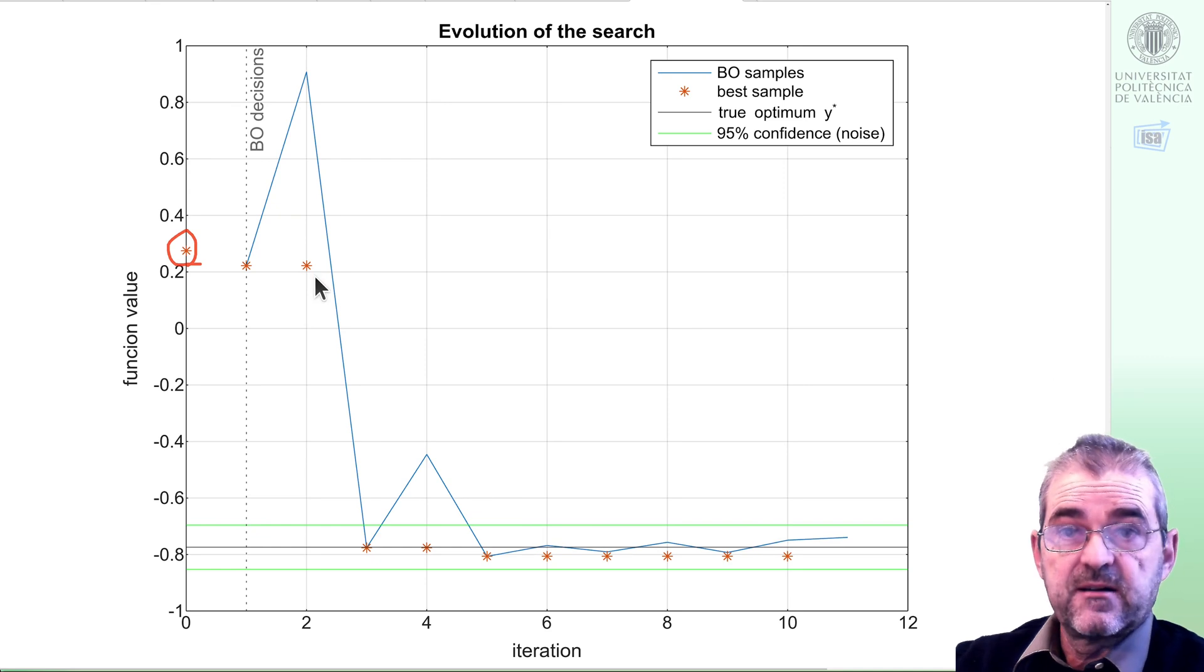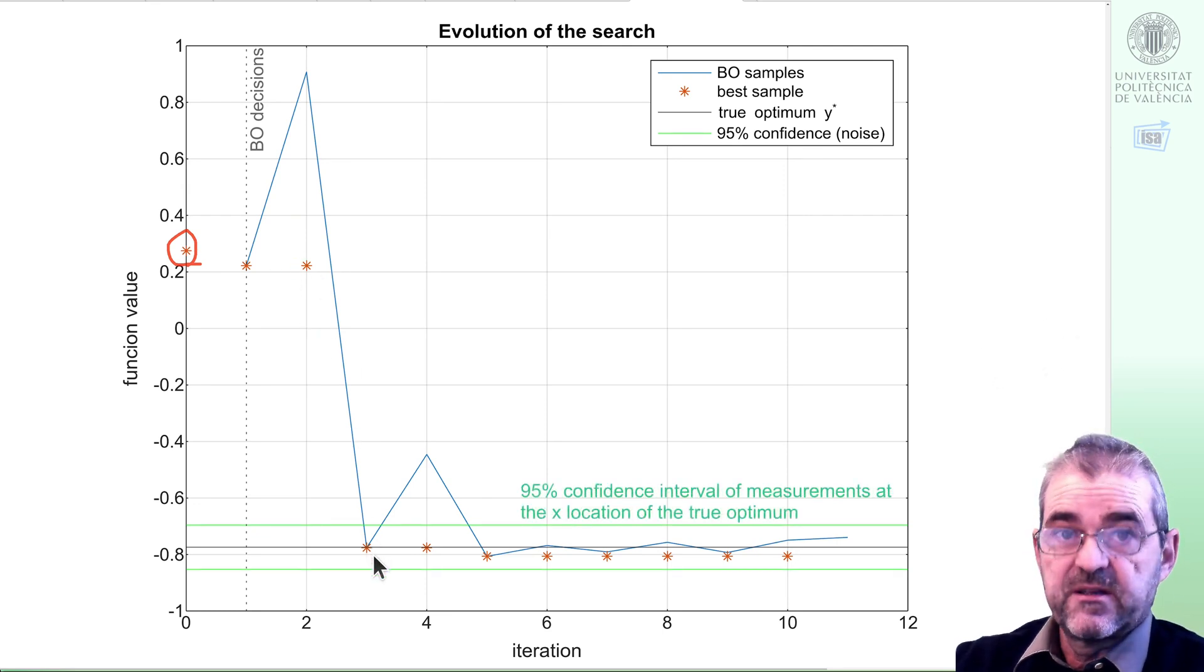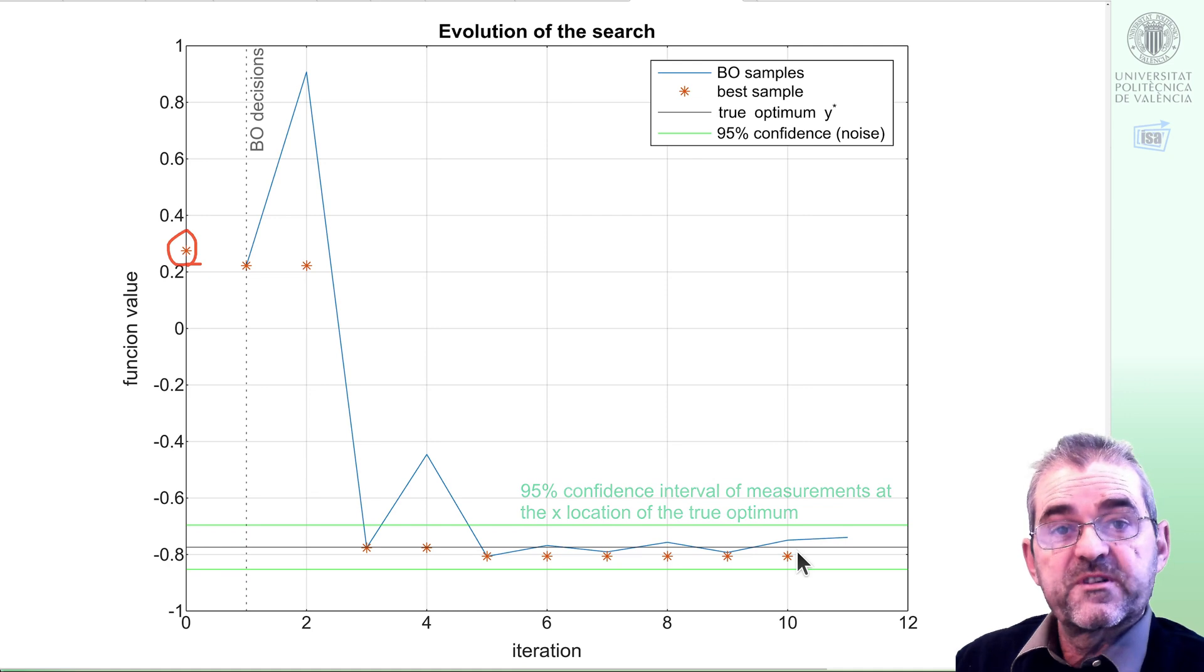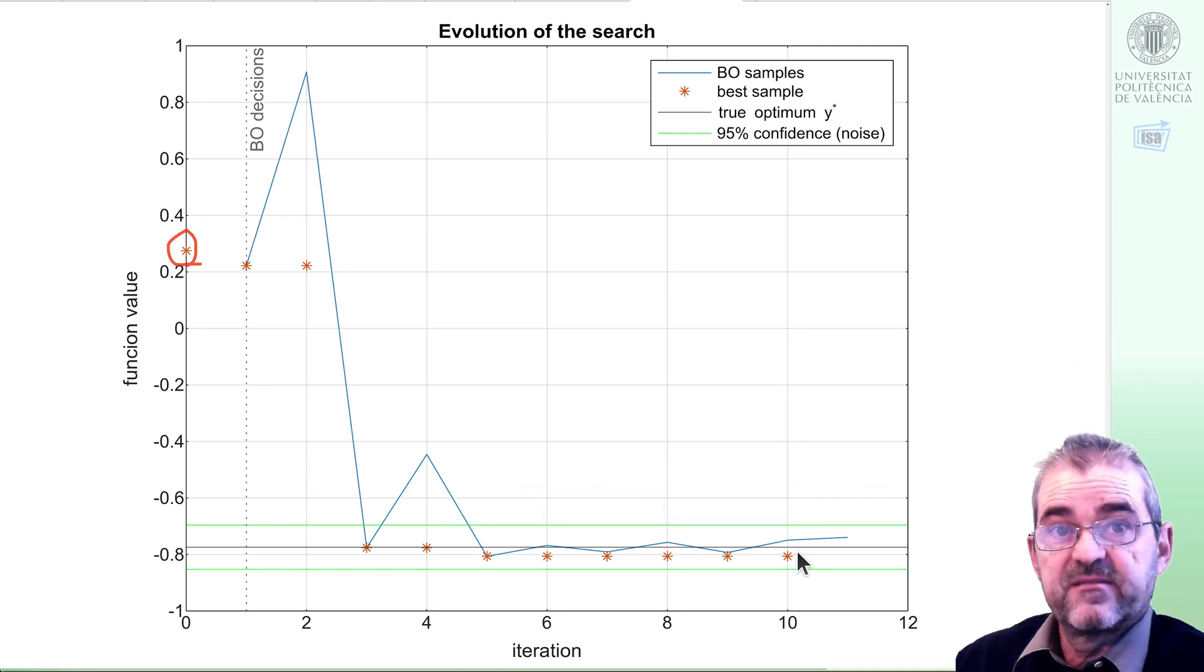And well, we see that basically after three Bayesian optimization decisions, we get the true optimum, plus minus measurement noise uncertainty, given by the two standard deviation confidence interval on the true optimum, which is the black horizontal line at minus 0.70 something. That true optimum is, of course, unknown, but our Bayesian optimization hits it after its third decision. So this example works perfectly because everything was prepared to show off the possibilities of this Bayesian optimization.